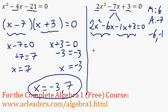I can factor out a 2x. So 2x squared divided by 2x is just x. Negative 6x divided by 2x is just negative 3.